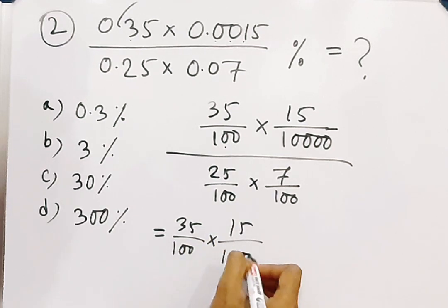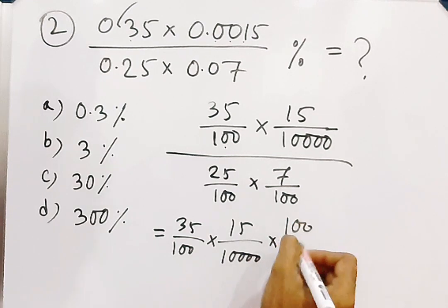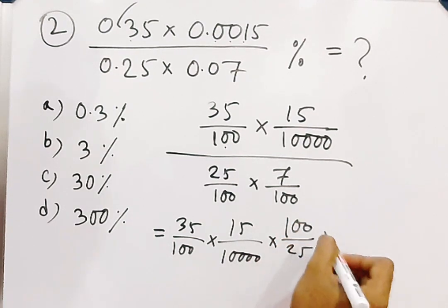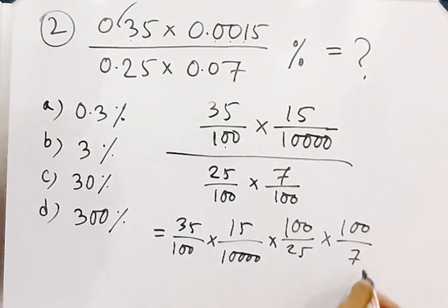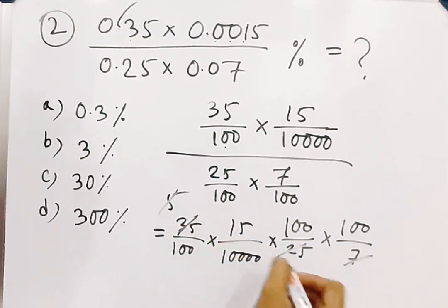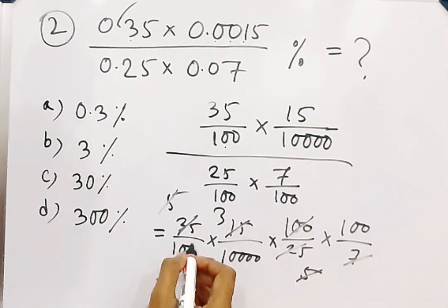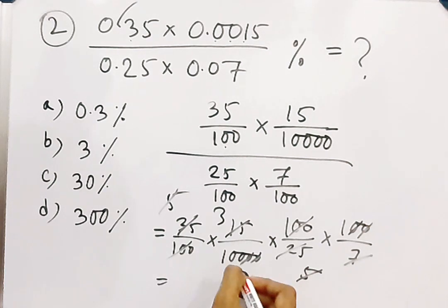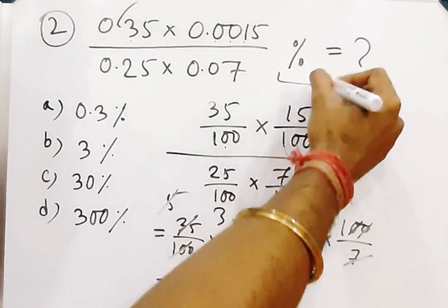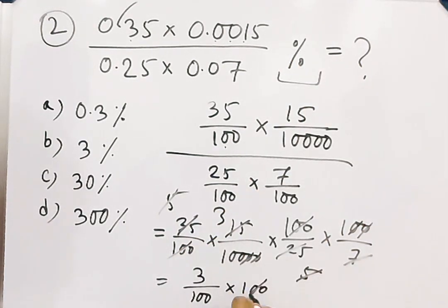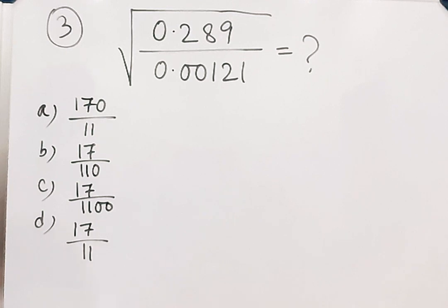So it will be 35/100 × 15/10000 divided by 25/100 × 7/100. After simplification: 7 into 35 gives 5, 5 into 25 gives 5, 5 into 15 gives 3, and the 100s cancel out, leaving 3 by 100. Since percentage means multiplying by 100, the answer is 3 percent.